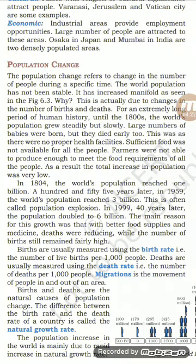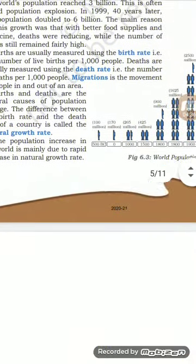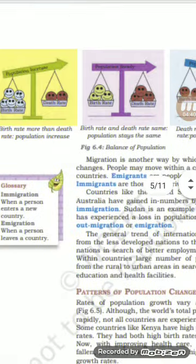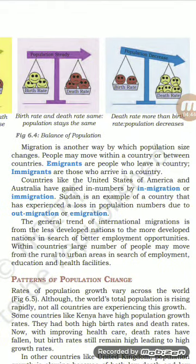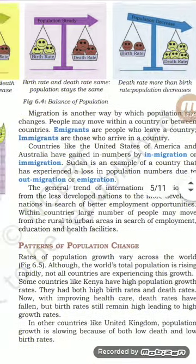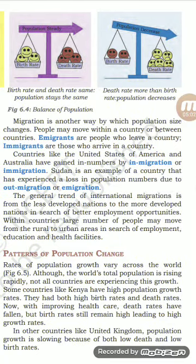The population increase in the world is mainly due to rapid increase in natural growth rate. विश्व में जनसंख्या के बढ़ने का मुख्य कारण प्राकृतिक वृद्धि दर का तीव्रता से बढ़ना है। Migration is another way by which population size changes — people may move within a country or between countries. प्रवास एक अन्य कारण है जिससे जनसंख्या के आकार में परिवर्तन होता है। लोग एक देश में अथवा देशों के बीच एक स्थान से दूसरे स्थान पर जा सकते हैं।